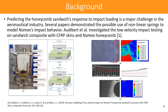Bird et al. investigated low-impact velocity testing on sandwich composites with carbon fiber reinforced plastic (CFRP) skins and Nomex honeycomb. Nomex honeycomb is an important and popular honeycomb structure prevalent in today's market. On the left-hand side you can see their experimental setup with accelerometer, specimen, and camera, along with their test matrix, and on the right their simulation results showing damage and delamination induced into the honeycomb structure through impact loading.